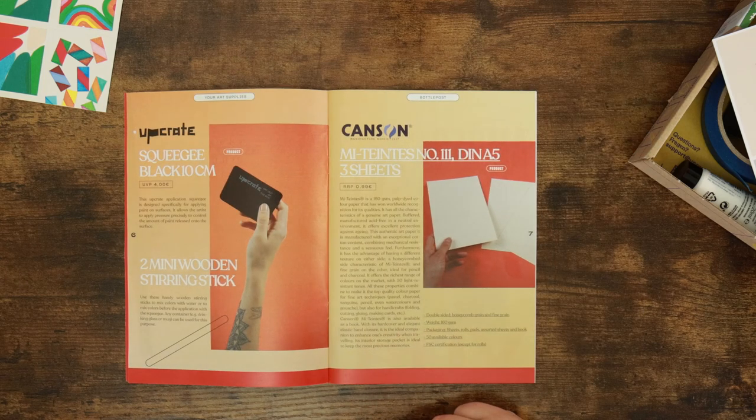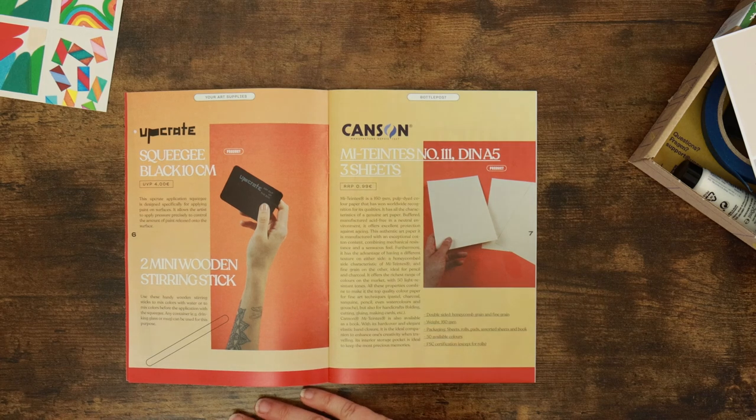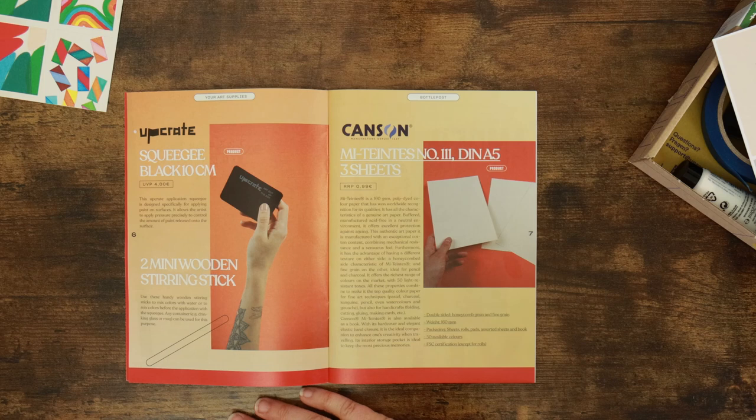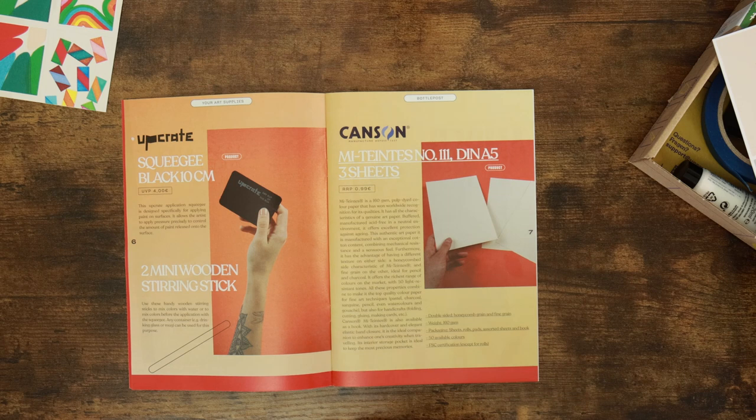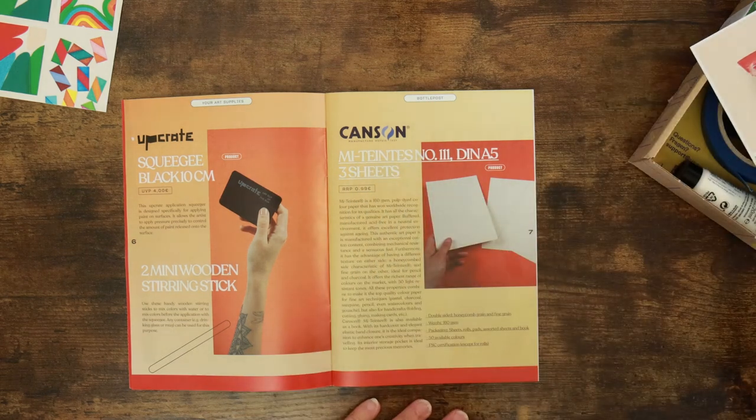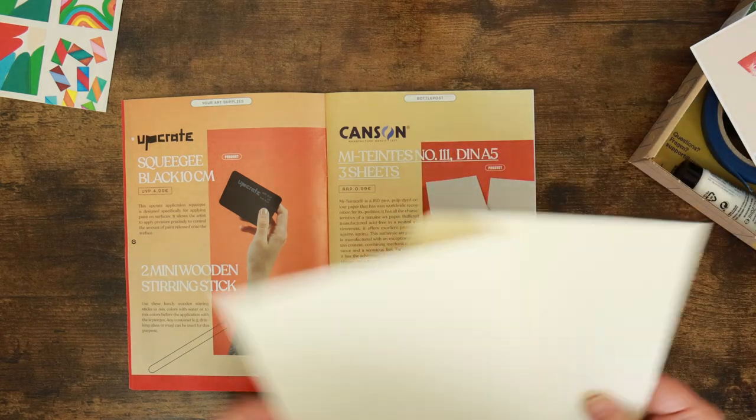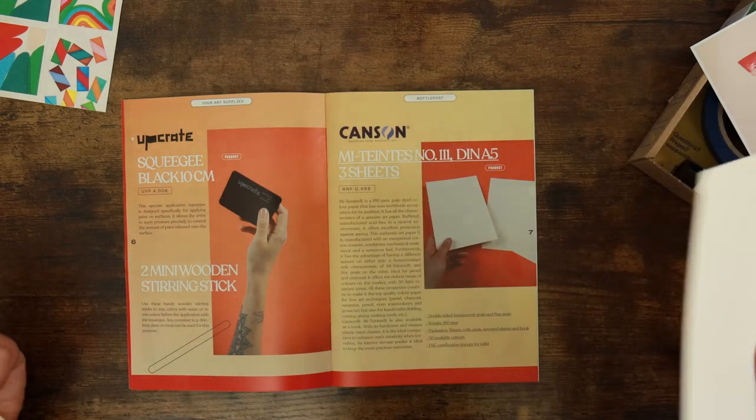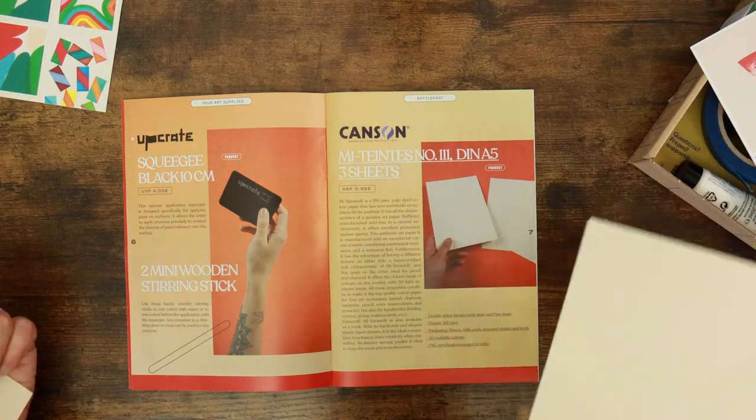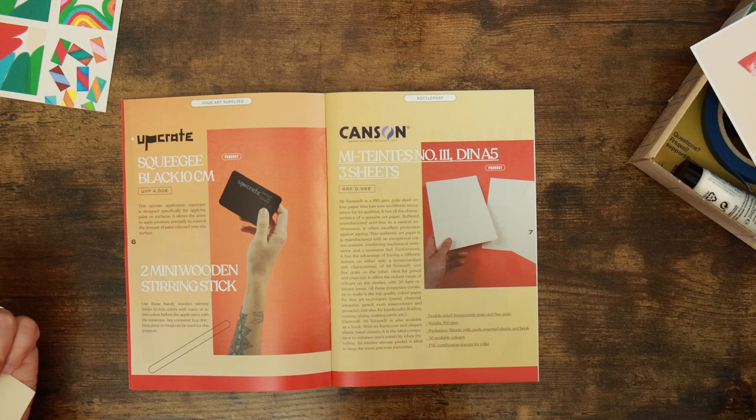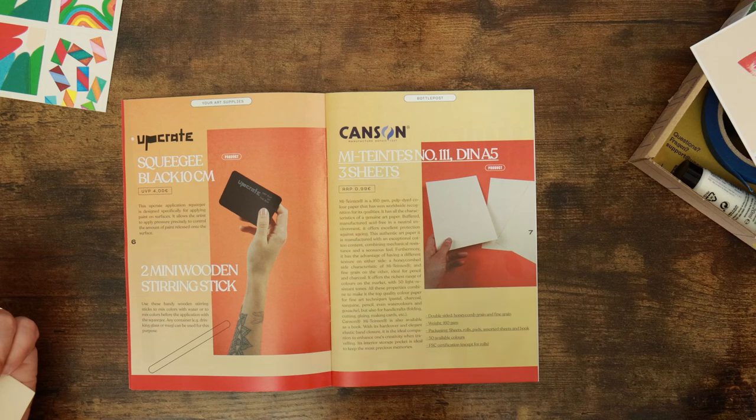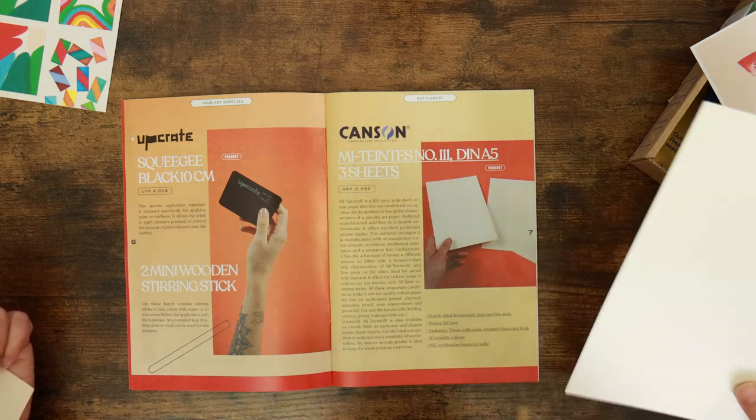And here is the Canson Matant No. 111 paper. 160 GSM pulp dyed colour paper. Buffered, manufactured acid-free in a neutral environment. It has an exceptional cotton content, except they don't tell you how high the cotton content is. A sensuous feel. No, it's not sensuous at all. It's knobbly-bobbly. I don't like it. Okay, they're saying it's got the different texture on each side. Oh yeah, I like this. Okay, this side's sensual. Take that back. Honeycomb side characteristic of methane and fine green on the other. Charcoal and pencil on the fine green. It comes in 50 light resistant tones. I'm not really into Canson paper, but yeah, okay.